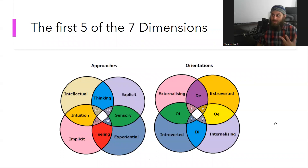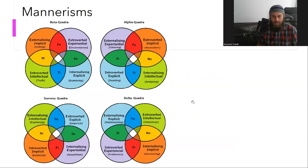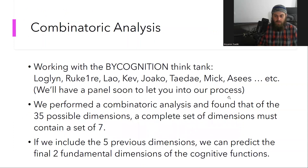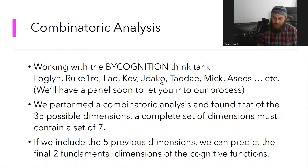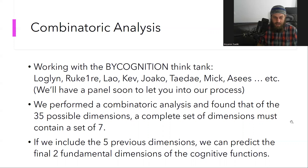Now, where did we get the other two from? This is going to be interesting. We also discussed the mannerisms in the other video — when you combine these two dimensions together, you end up getting all the mannerisms in the quadra. So I was working with the biocognition think tank a little bit. Here are a few of the names: Loughlin, Rook, Lau, Kev, Joako, Tedemik, Assis. We'll have a panel soon with a few of these people just to let you into our process. We just have to schedule it because we're all in different time zones.